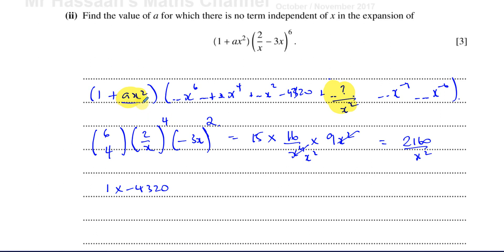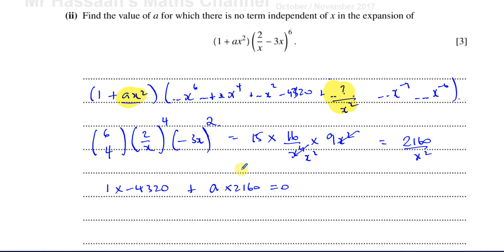When I multiply ax² by this term (2,160/x²), I get plus a × 2,160, and the x² cancels out. So this is my constant term from that combination. The two contributions to the constant — (1 × −4,320) and (ax² × 2,160/x²) — together give the total term independent of x. For there to be no such term, this combination must equal 0.